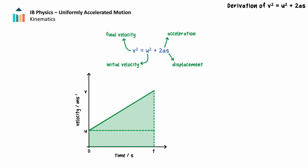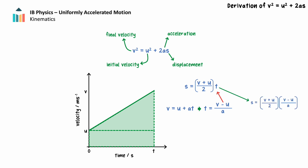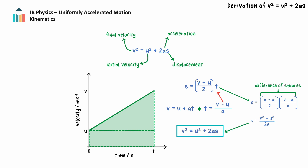Finally, we'll look at our formula that excludes time. The final velocity squared is equal to the initial velocity squared plus two times the product of acceleration and displacement. To derive this formula, we start with displacement equals the product of average velocity and time. We can rearrange the formula v equals u plus at for time. Substitution for time in our displacement formula yields a difference of squares, which can be factored and algebraically rearranged to yield the formula: v squared equals u squared plus 2as.